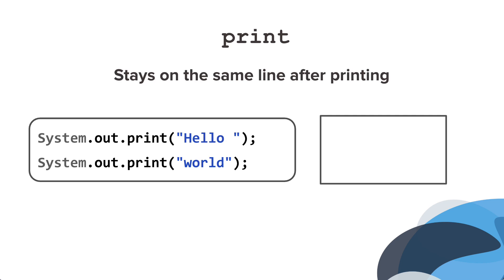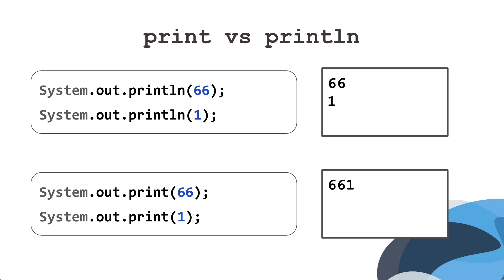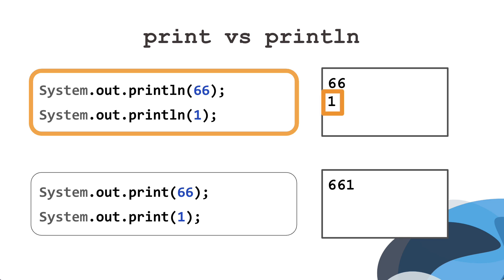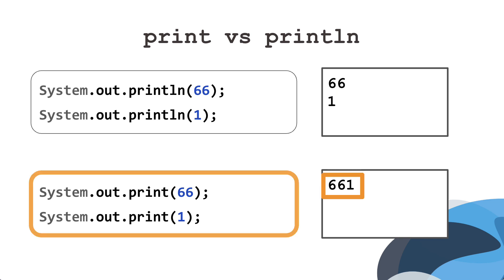Print, on the other hand, without the ln, stays on the same line after printing. So if you were to replace the printlns with print, you would still get 'hello world,' but 'world' would be on the same line as 'hello.' This applies to all literals, not just string literals. Here is an example with integers: when you use println, the 1 is printed on a new line. However, when you use print, the 1 is on the same line as the 66.